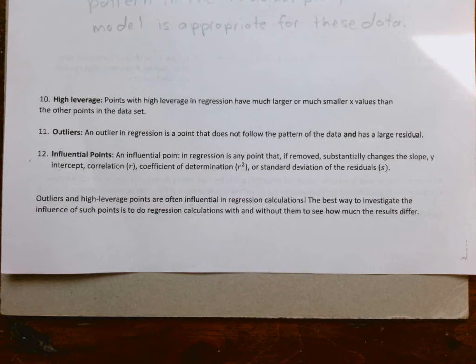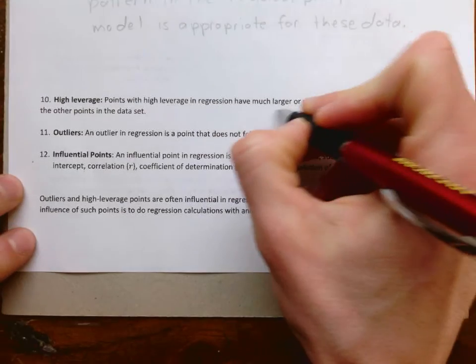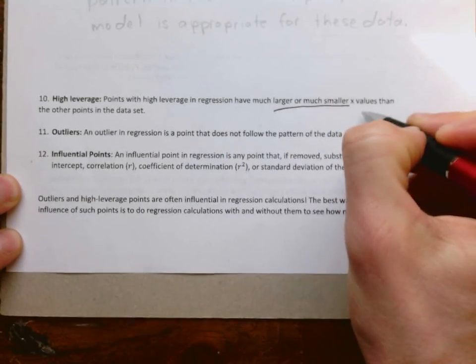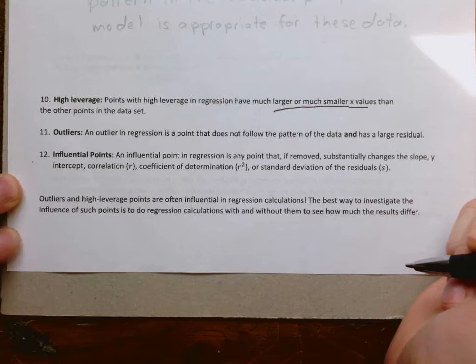A high leverage point is a point in a regression that has much larger or much smaller x values than the other points in the data set. That's what you're on the lookout for: much larger or much smaller x values.